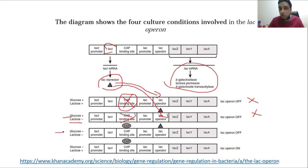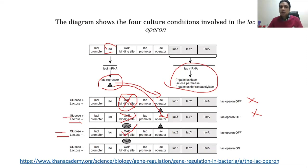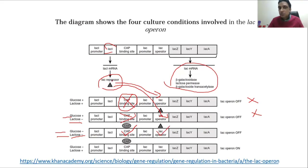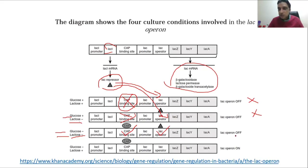Third case scenario: glucose is not present, lactose is not present. If glucose is not there, the cyclic AMP level will increase and the CAP binding site will be occupied — that's a good thing. But since lactose is not present, the lac operator will also be bound by the repressor, because in the absence of lactose the repressor becomes activated and binds to the operator. So still, there is no activation of the operon in this case.